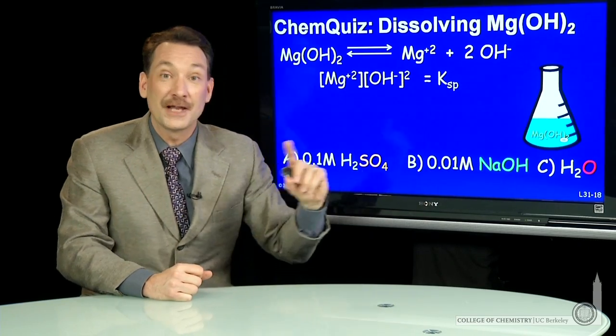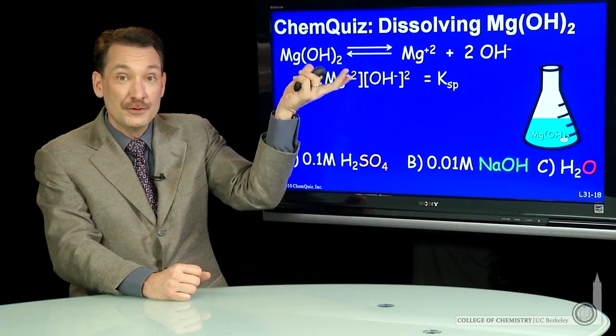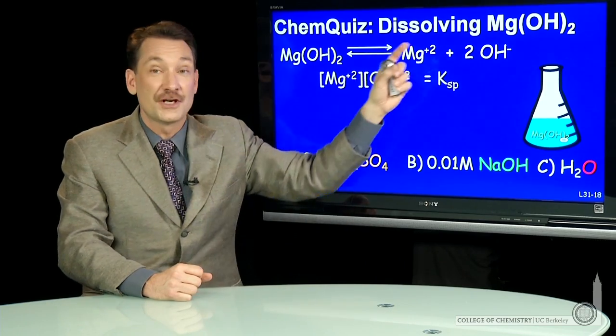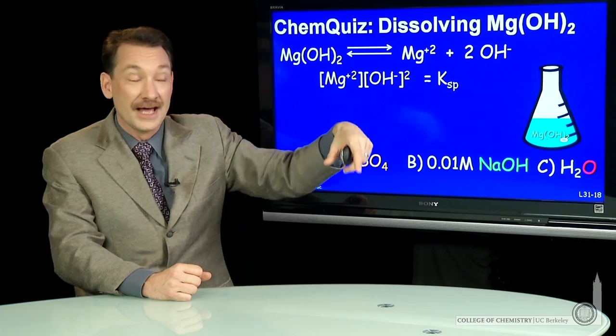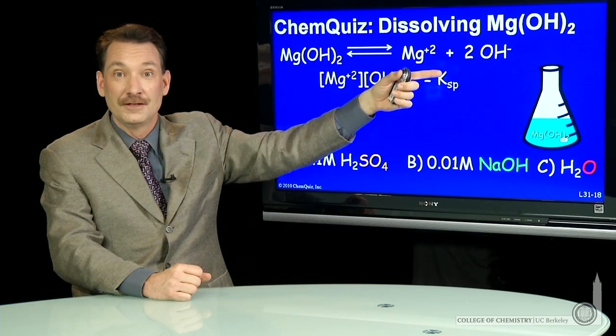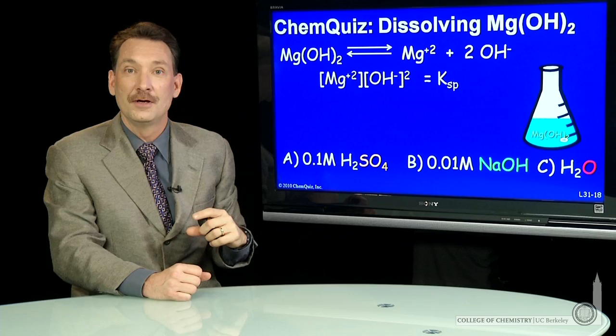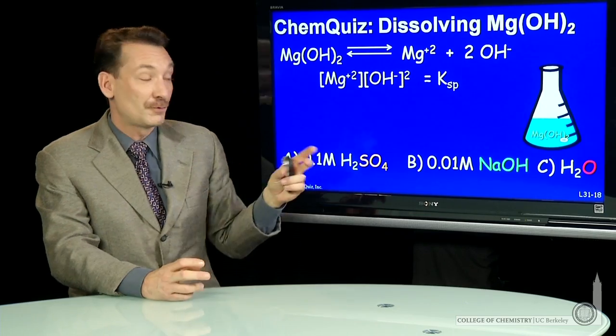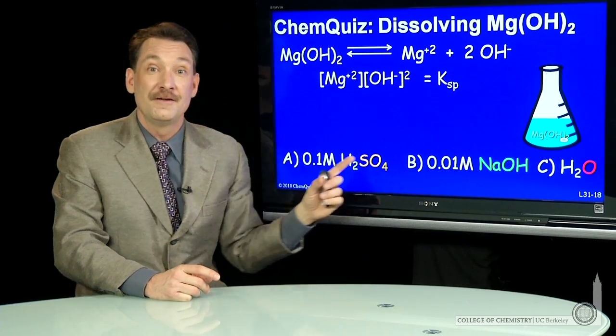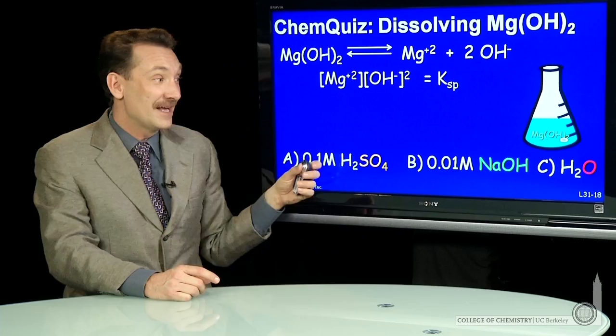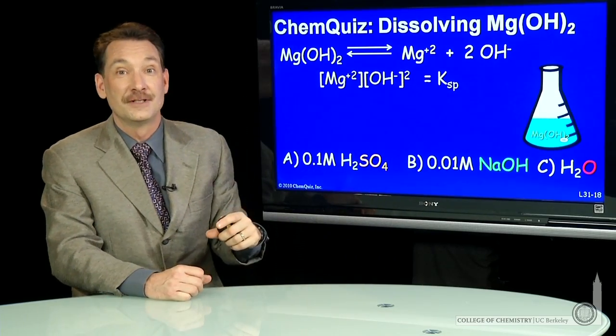If I add plain water, that will dilute the solution. These two concentrations will go down, and more will dissolve to make these concentrations come back up to the equilibrium constant. The question is, which goes faster, adding some acid or adding the straight water?